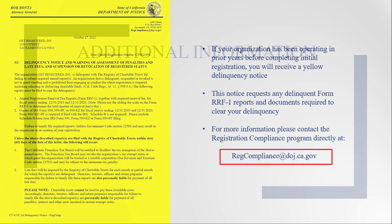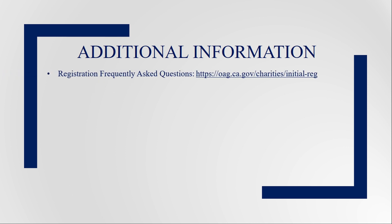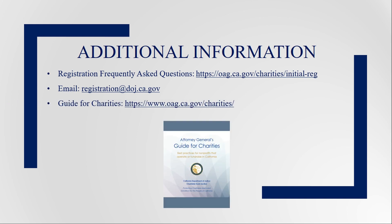For additional information regarding the initial registration process with our office, please visit the Frequently Asked Questions section of our website. Specific questions or concerns can be addressed by emailing registration@doj.ca.gov. We recommend newly formed organizations review the Attorney General's Guide for Charities located on our website. Thank you for viewing this information on registration for charities operating in California. We hope the information and instructions have been helpful.